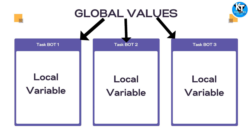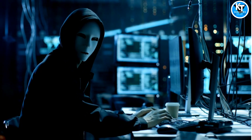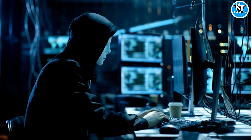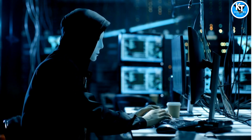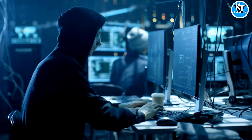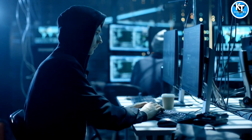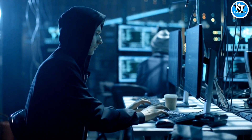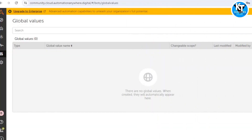If we want to change the value in the future, we just need to change the value of that global value once. If we are using a local variable instead, we would need to open all the bots and update the value of the local variable in each one. So instead of doing that, we can just update the value in the global variable.